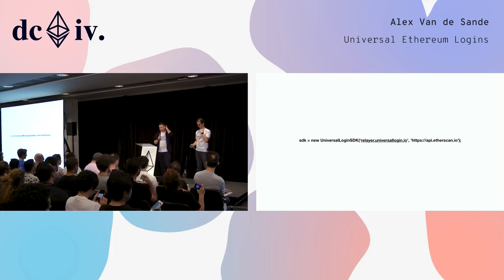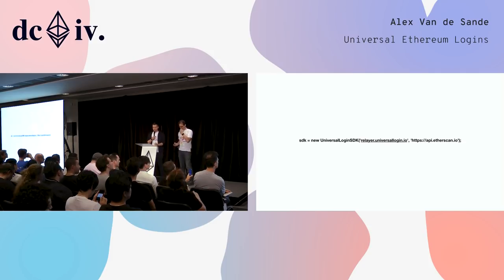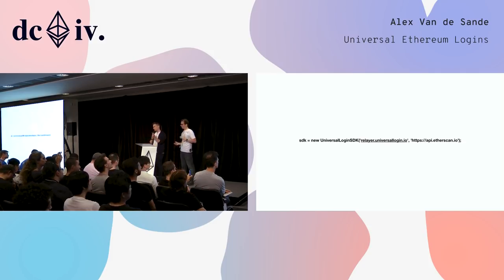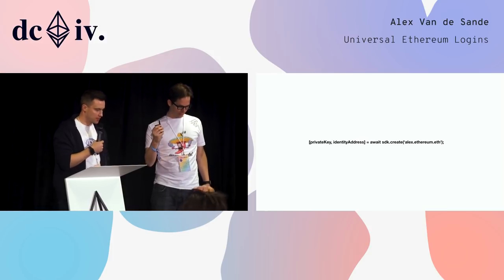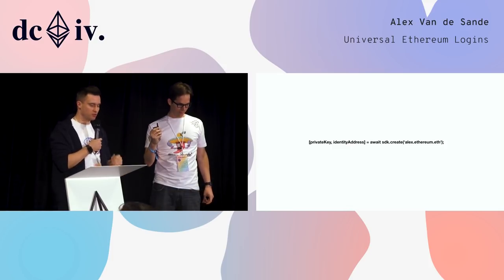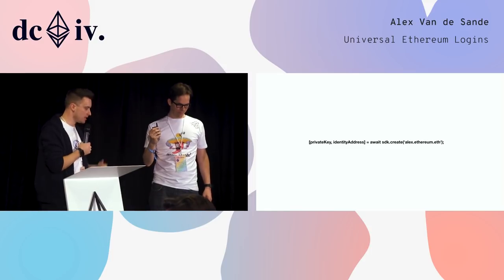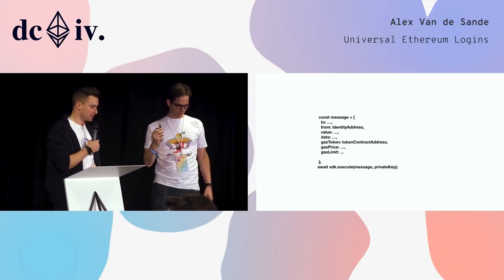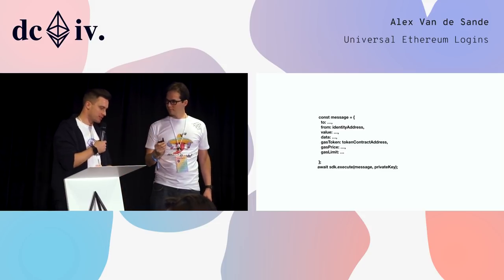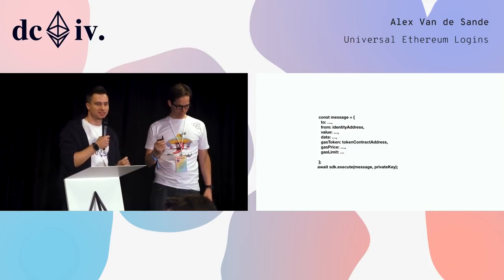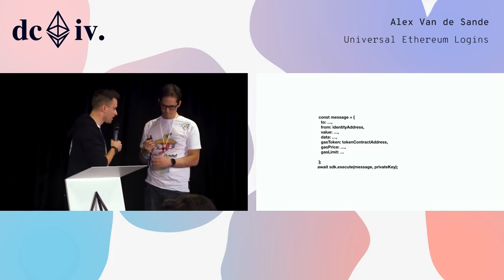Wanted to show you how simple the API we built is. To start using universal logins, all you need to do is create an SDK. The SDK has just two parameters: the address of the relayer and the address of the Web3 node. Then it's just one command to create an identity — you specify the ENS name, and you get a private key and identity address in return. You can then send a transaction which looks pretty much the same as any Ethereum transaction, with an extra gas token parameter so you can pay in something other than Ether.